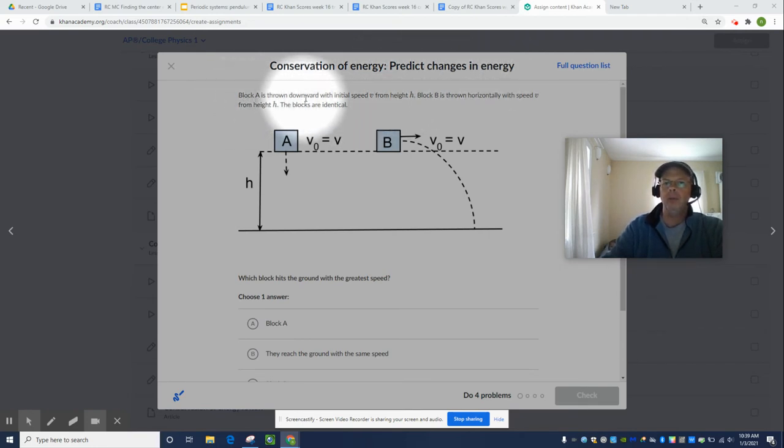Block A is thrown downward with an initial speed V from height H. Block B is thrown horizontally with speed V from height H. The blocks are identical. Which block hits the ground with the greatest speed?